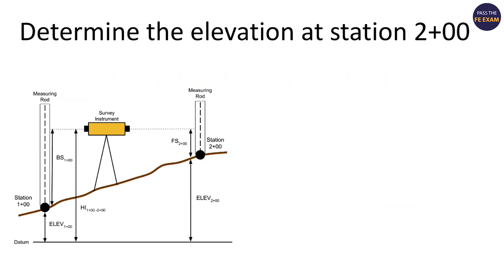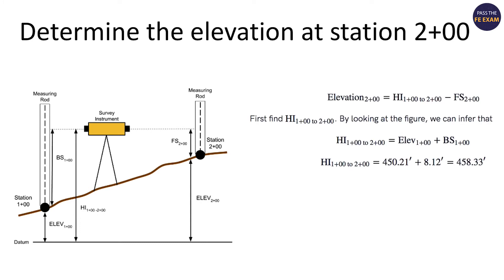So let's take a look at that now. We're determining the elevation at station 2+00. You're going to take the height of instrument from 1 to 2 — it's the same height the entire way. You get that by taking the elevation at station 1, which is 450.21, and adding the back sight reading at 1+00, which is 8.12. That gives you a height of instrument of 458.33.